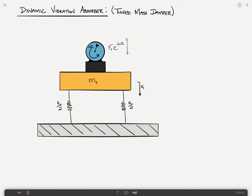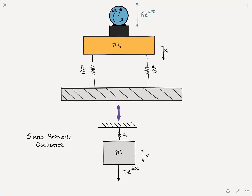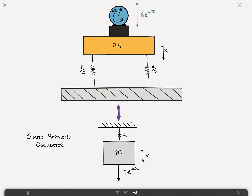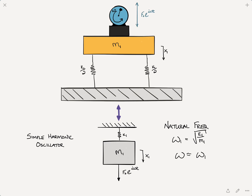These amplitudes get very very big and in many cases they're undesirable. We can model this as a simple harmonic oscillator with natural frequency omega sub 1, where omega₁ = sqrt(k1/m1). So omega is approximately equal to omega 1 and we're getting very big vibrations. What we'd like to do is use a mass-spring system — attach an auxiliary mass-spring system — in order to reduce the response.